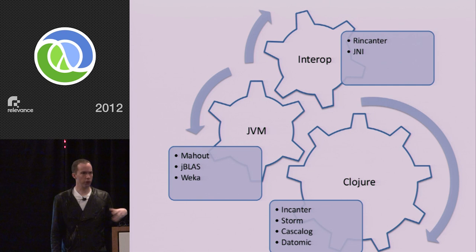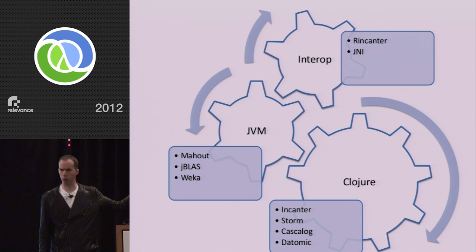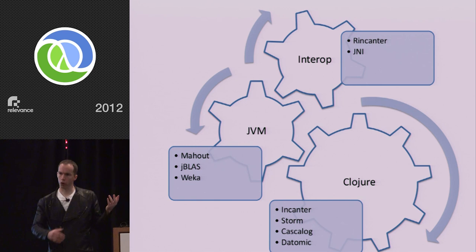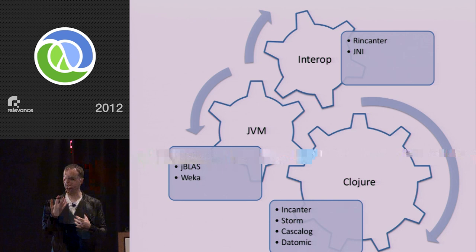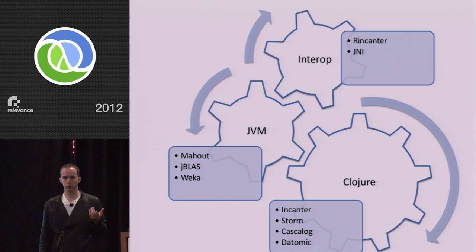Then for large-scale problems, Storm for distributed computation. Cascalog as a nice data log abstraction over Hadoop. Datomic for bringing the data into your process so that you can handle it locally. And there's a bunch of other stuff, but these are the leaders. If you're trying to solve a problem and your library doesn't exist in Clojure, you can reach out to the JVM and get it there. Mahout is machine learning on Hadoop. Weka is a long-standing machine learning package from Waikato University in New Zealand. JBLAS is linear algebra. It's a very nice compromise between calling out to Fortran on the native platform and keeping things in Java.